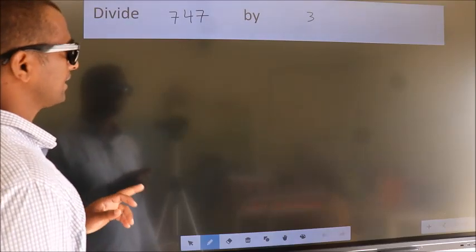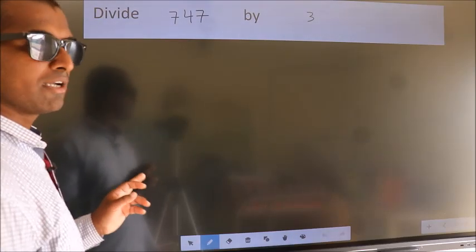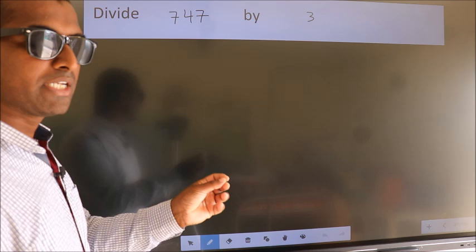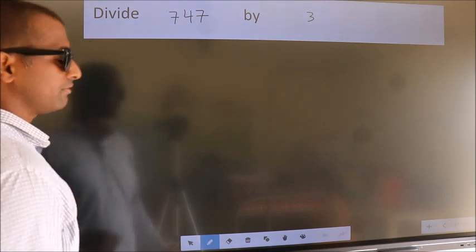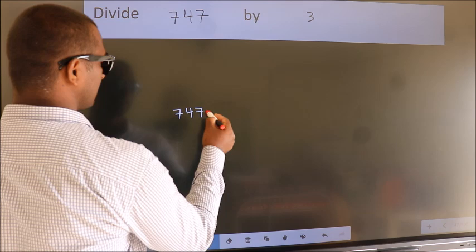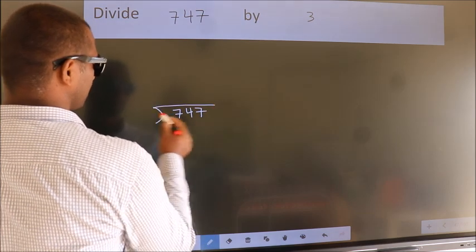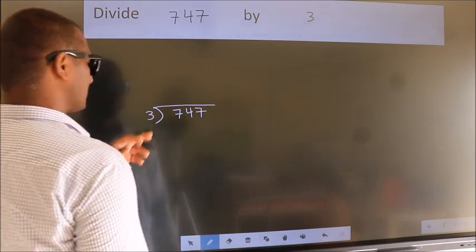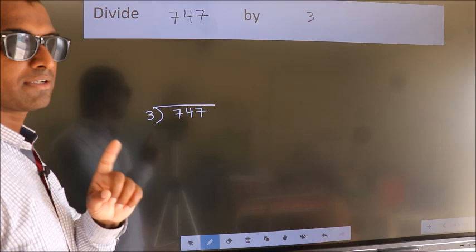Divide 747 by 3. To do this division we should frame it in this way. 747 here, 3 here. This is your step 1.